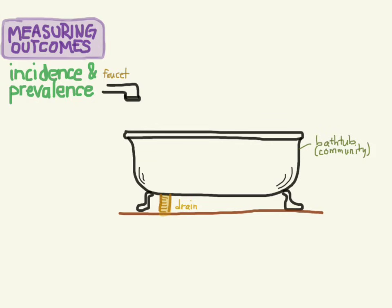Let's put some water in this tub. This water represents the prevalence of disease. So the more water that's in the tub, the more disease prevalence there is. The less water, the less prevalence. Remember, prevalence represents the burden of disease in a community — how many people have that disease. So the more water in this tub, the more people have the disease.